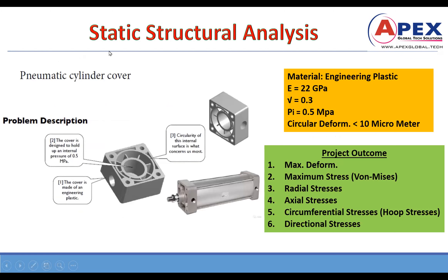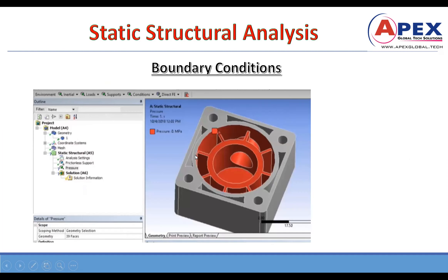One example of static structural analysis is a pneumatic cylinder cover, where high internal pressure is applied inside. The input material properties are Young's modulus, Poisson's ratio, and the internal pressure. The outcomes we need to find are maximum deformation, maximum Von Mises stress, radial stress, axial stress, circumferential stress, and directional stress. Everything will be learned in ANSYS Workbench; I will explain how to perform this.